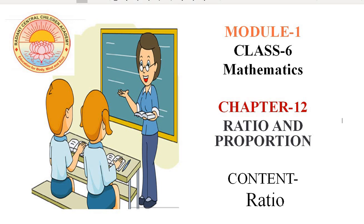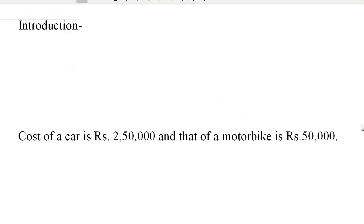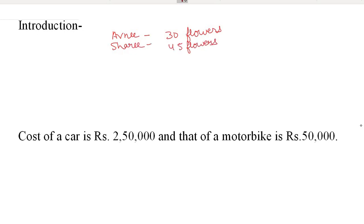First, let us know what is ratio. In our daily life, many times we compare two quantities of the same kind. For example, Avni and Sari collected flowers for a scrapbook. Avni collected 30 flowers and Sari collected 45 flowers. We may say that Sari collected 45 minus 30, that is 15 flowers more than Avni.